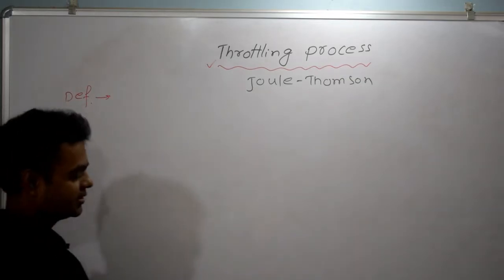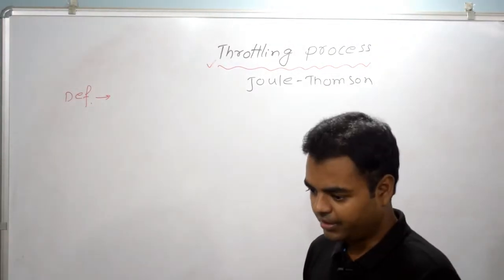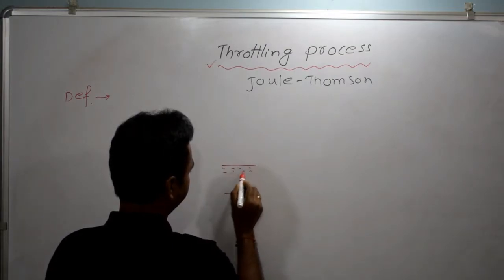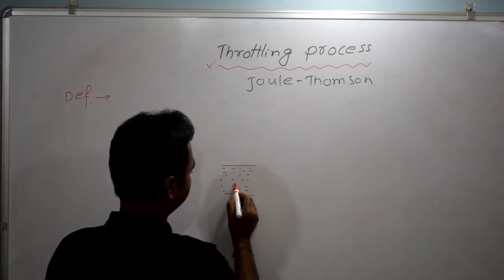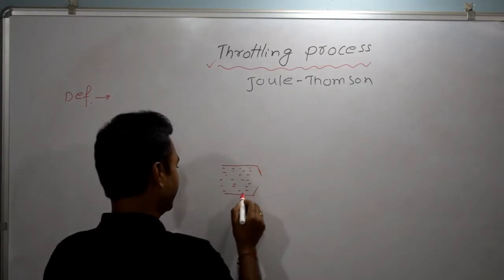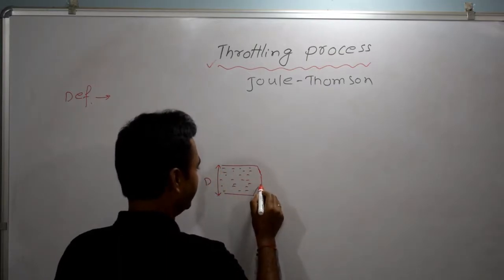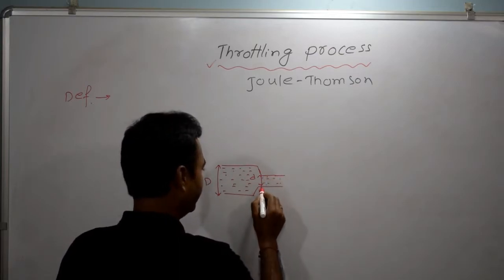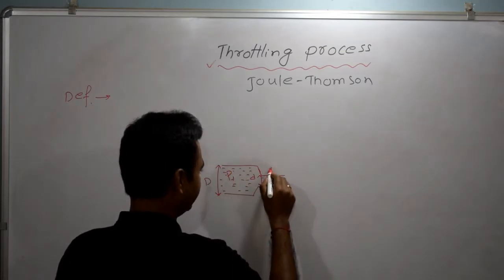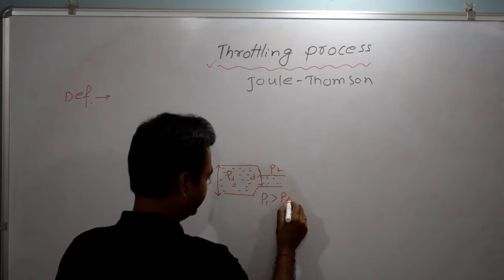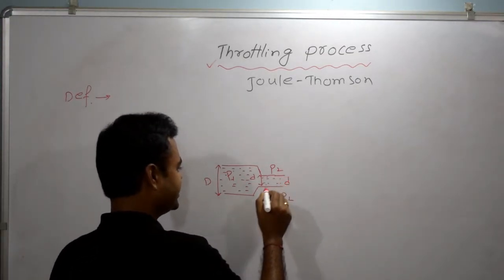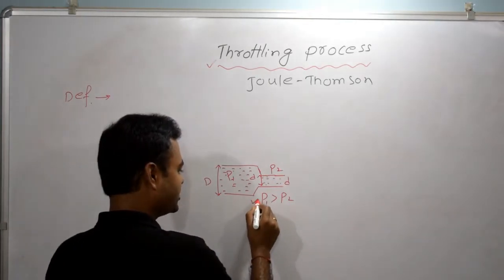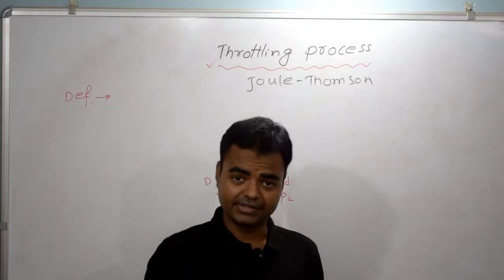Let's understand the definition of throttling process with a diagram. Suppose fluid is flowing and we are decreasing the diameter — let's say diameter here is capital D and here diameter is small d. Now if pressure P1 is here and pressure P2 is here, P1 is greater than P2, because we have decreased the diameter, the flow of fluid pressure will decrease.